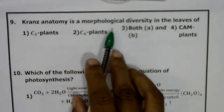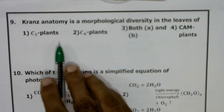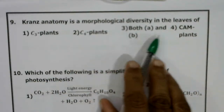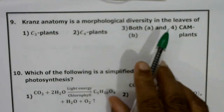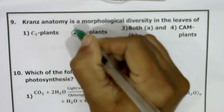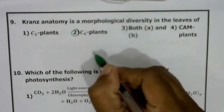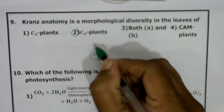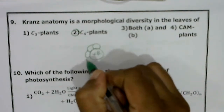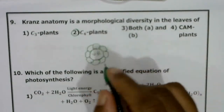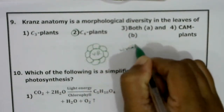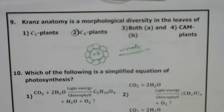Kranz anatomy is a morphological diversity in the leaves of: C3 plants, C4 plants, both, or CAM plants? Kranz anatomy is found only in C4 plant leaves. The vascular bundles are surrounded by thick-walled, compactly arranged cells rich in chloroplasts, surrounding the vascular bundle like a wreath. This is called Kranz anatomy. Correct answer: C4 plants.